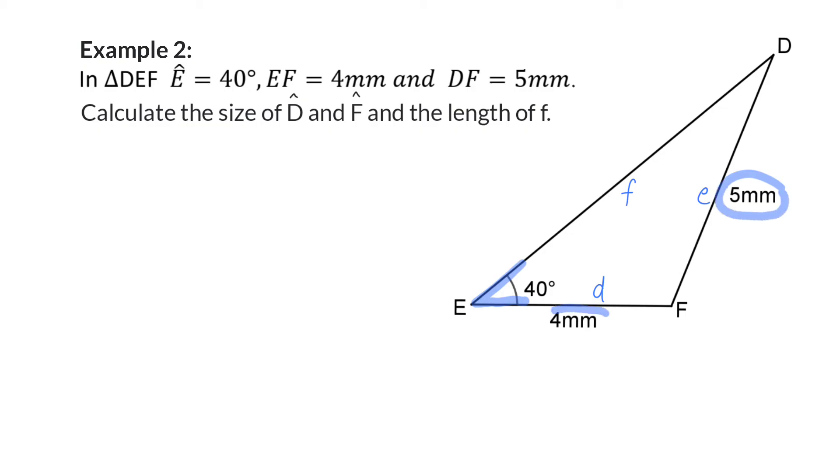We have angle E, side e, and side d. This means I can use the sine rule with my complete pair side and angle E. My second pair will then be side and angle D, because I already have side d, so then I can start off determining the size of angle D. I'm determining an angle size, so I put the angles in my sine rule at the top, and as mentioned, we are going to work with the pair of E, which we have all the information, and the pair D.